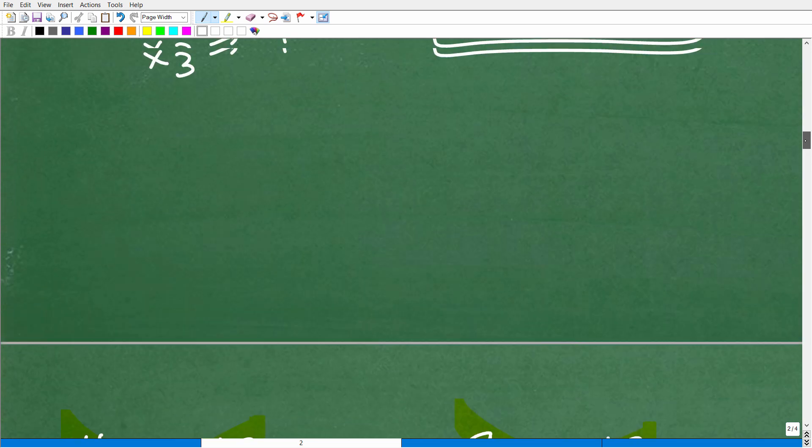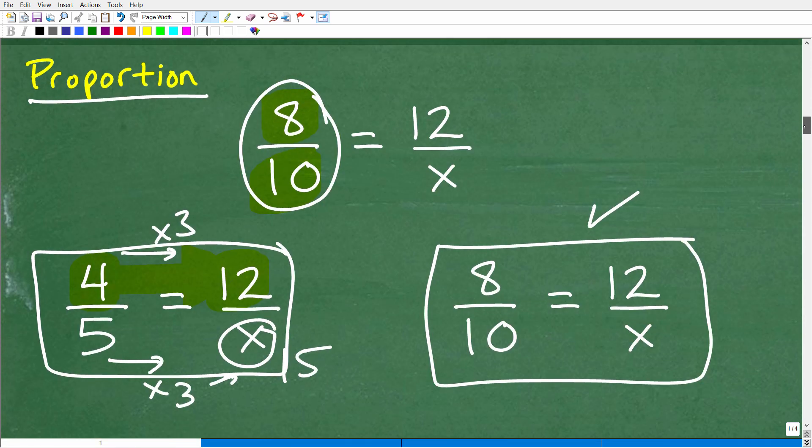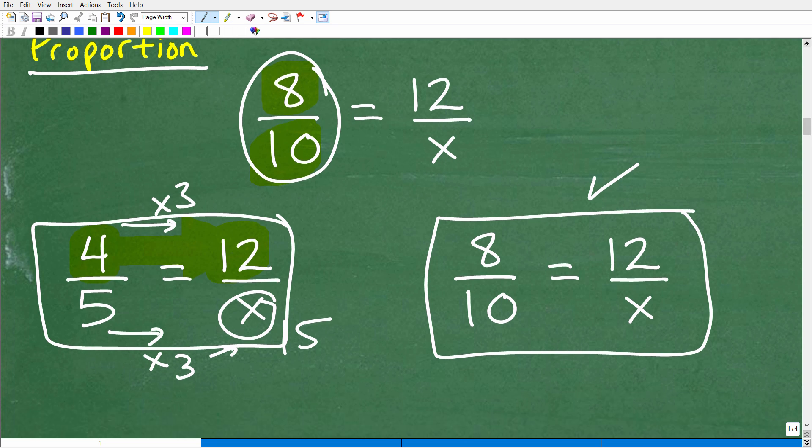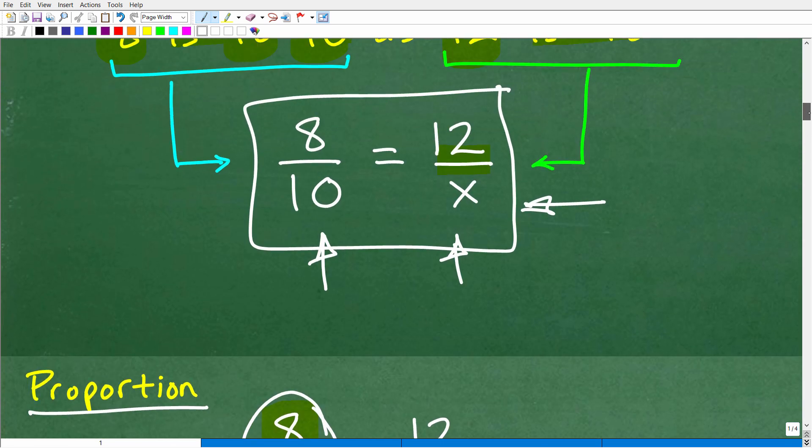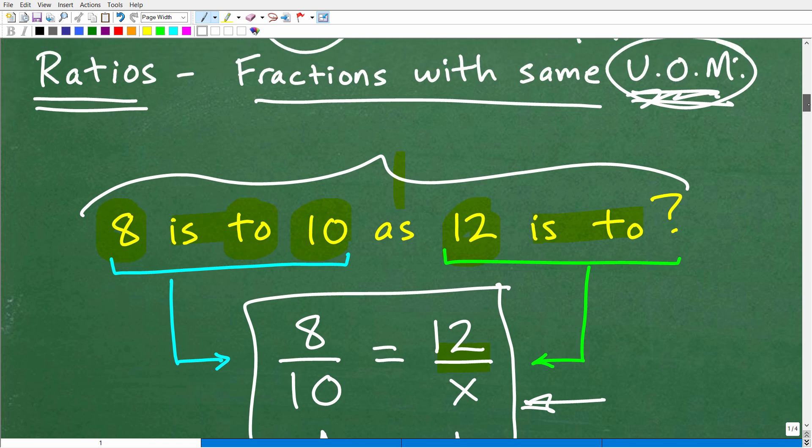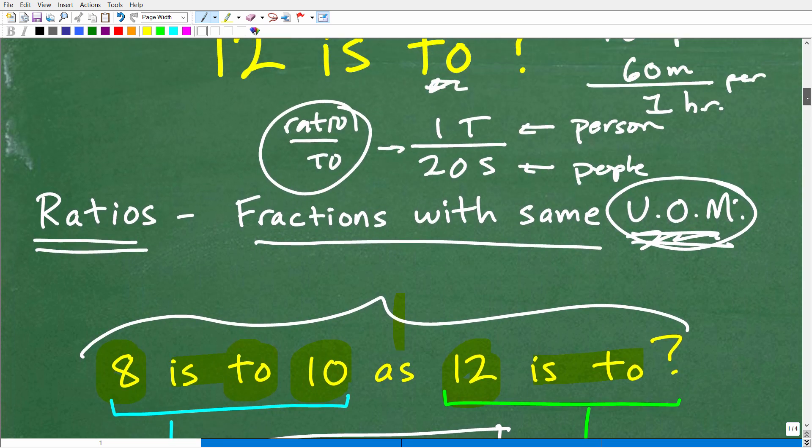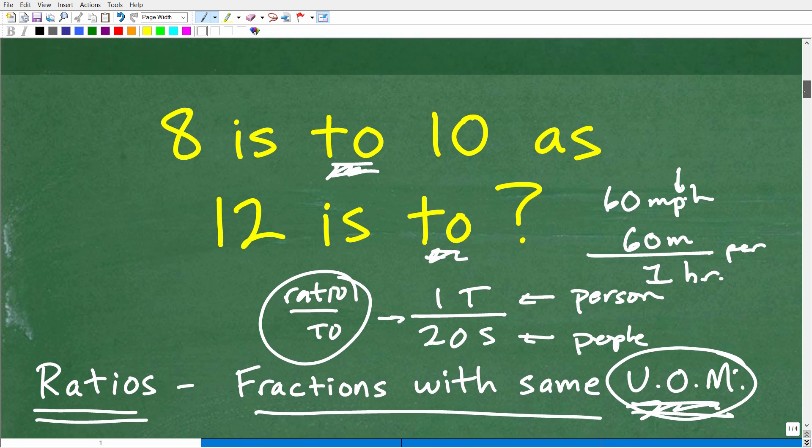And, again, this is using the cross product. When you study proportions, you can learn some other terms as well, things like the means and the extremes and some other things. There's different properties of proportion. So I'm kind of giving you kind of the basic foundational stuff. But if you remember the cross product, you'll always be able to solve proportion problems. But more importantly, proportion problems are related to rate and ratio problems. You definitely, as a math student, okay, if you're learning any kind of algebra or beyond, you have to understand rates, ratios, and proportions.